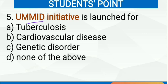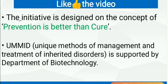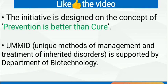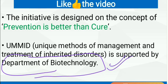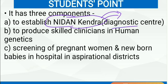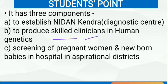Next question: UMID initiative is launched for genetic disorders — C is the right answer. This initiative is designed on the concept of 'prevention is better than cure.' UMID stands for Unique Methods of Management and Treatment of Inherited Disorders and is supported by the Department of Biotechnology. It has three components: establishing Nidan Kendras (diagnostic centers), producing skilled clinicians in human genetics, and screening of pregnant women and newborn babies in hospitals in aspirational districts.